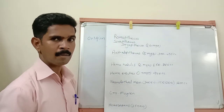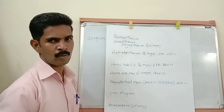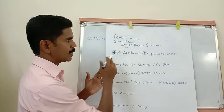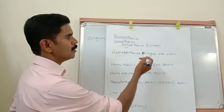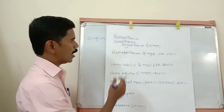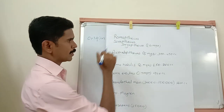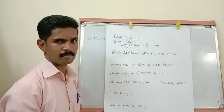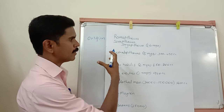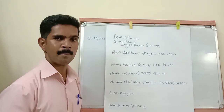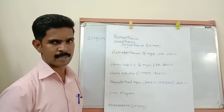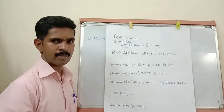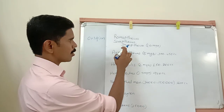Dryapithecus were lived in the world 14 million years ago. Their body was fully covered with hair, and they walked like gorillas and chimpanzees — which belong to the monkey species. These are the specific characters of Dryapithecus.